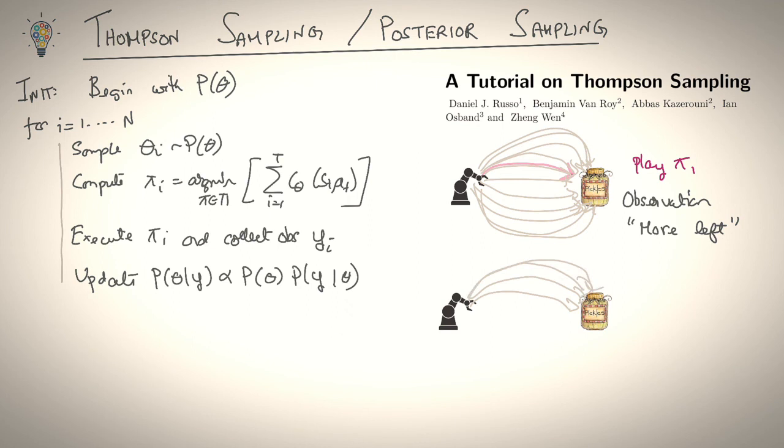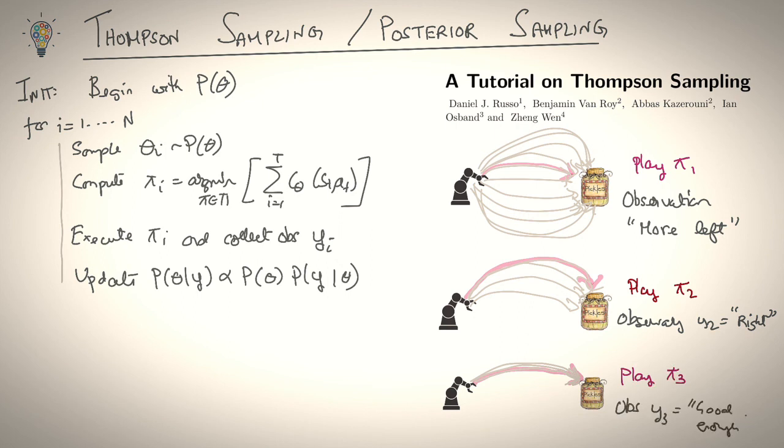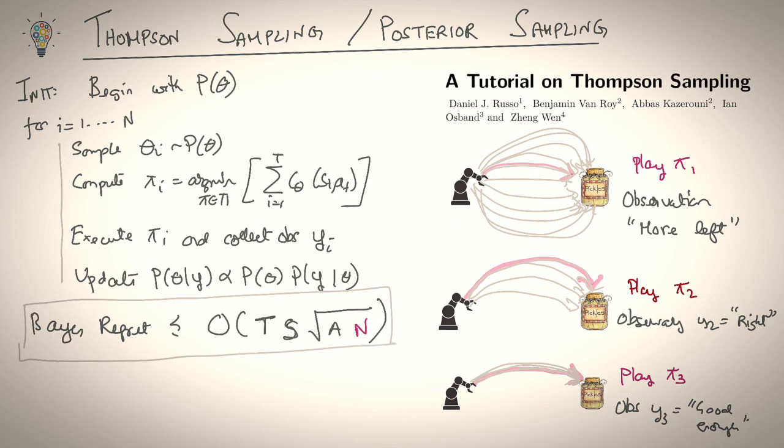So based on this observation, one can update the posterior over theta using Bayes rule and keep repeating this process. So in round two, the robot's only left with cost functions that prefer going more to the left. It then picks an extreme theta that really goes to the left and receives an observation that says to the right. And in round three, the robot's really left with a set of thetas that are pretty much on top of each other. So when it does play a policy pi_3, it gets an observation from grandma that says, good enough, job done. The simple algorithm enjoys a theoretical bound on the Bayesian regret. That reads as order of t, number of time steps, s, number of states, square root of a, number of actions, and n, the number of iterations. And that last term, n, is important because that essentially says that the average regret goes to zero.